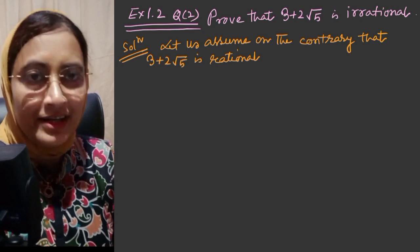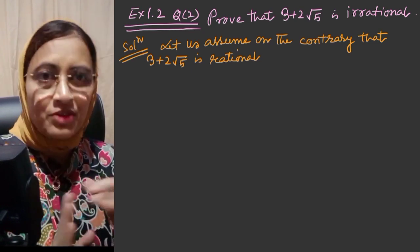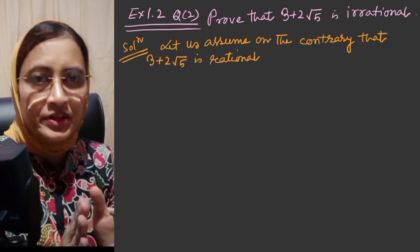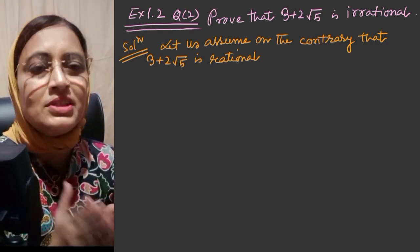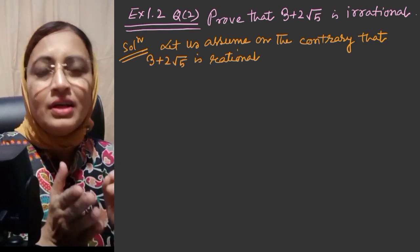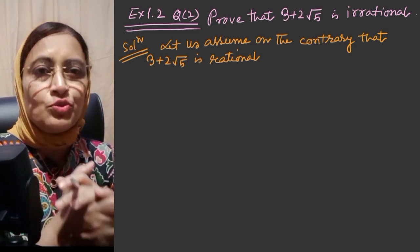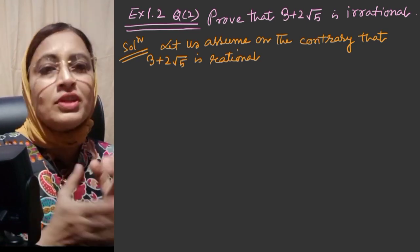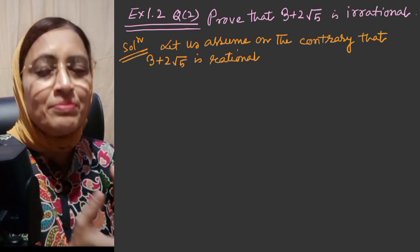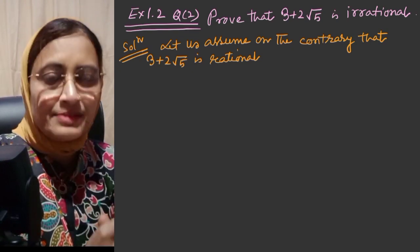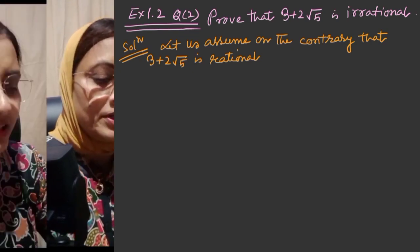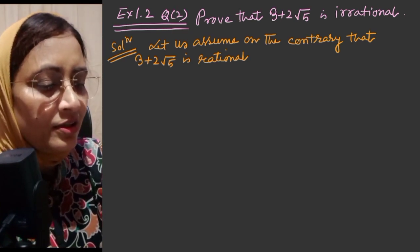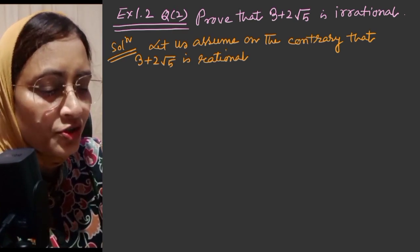I am going to use the method of contradiction. I will assume this is rational and show the basic property of P by Q format — that means this must be an irrational number. Let us assume on the contrary that 3 plus 2 root 5 is a rational number.